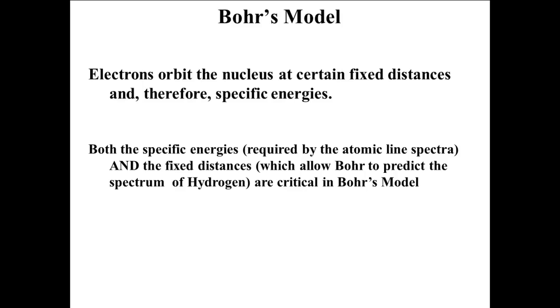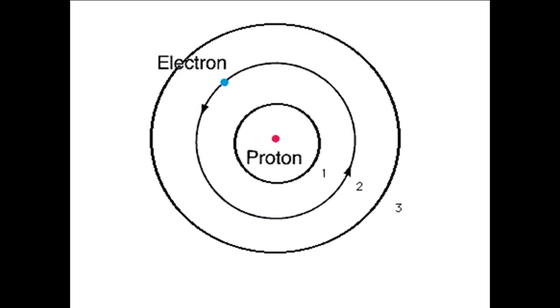Both specific energies, which are required by the atomic line spectra, and the fixed distances, which allow Bohr to predict the spectrum of hydrogen, are critical in Bohr's model. The changes in energy seen in the spectrum resulted from electrons jumping from one orbit to another, absorbing energy if moving outward and releasing it if moving inward.